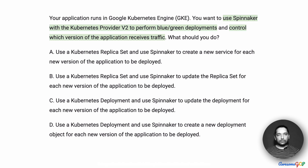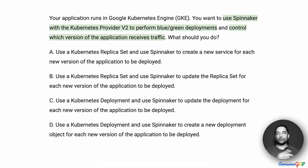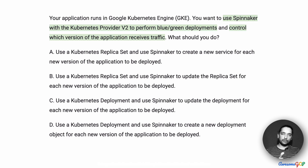This is a straightforward question which says that you're already using Spinnaker, you've got a blue-green deployment, and you want to control whether the blue deployment receives traffic or the green deployment receives traffic. How should we go about doing this?